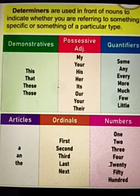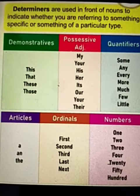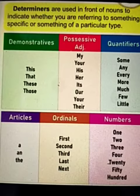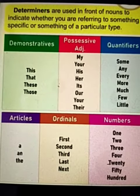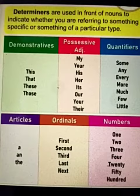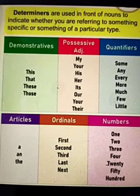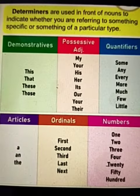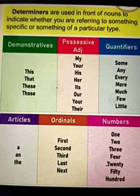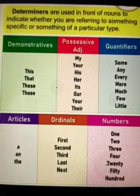Determiners are used in front of nouns to indicate whether you are referring to something specific or something of a particular type. Like demonstratives: this, that, these, those. Possessive adjectives: my, yours, his, her, its, us, your, their.